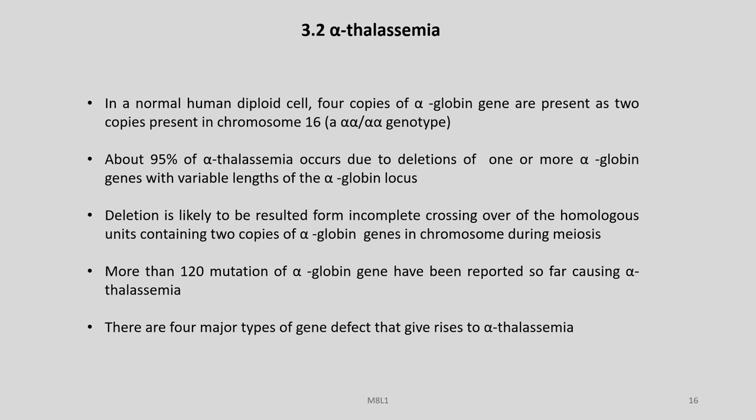In a normal human diploid cell, four copies of alpha-globin genes are present as two copies on chromosome 16. About 95% of alpha thalassemia occurs due to deletions of one or more alpha-globin genes with variable lengths of the alpha-globin locus. Deletion likely results from incomplete crossing over of homologous units containing two copies of alpha-globin genes in the chromosome during meiosis. More than 120 mutations of alpha-globin genes have been reported so far which cause alpha thalassemia.